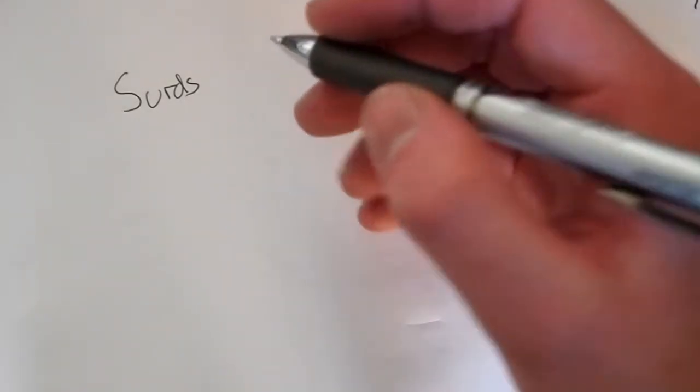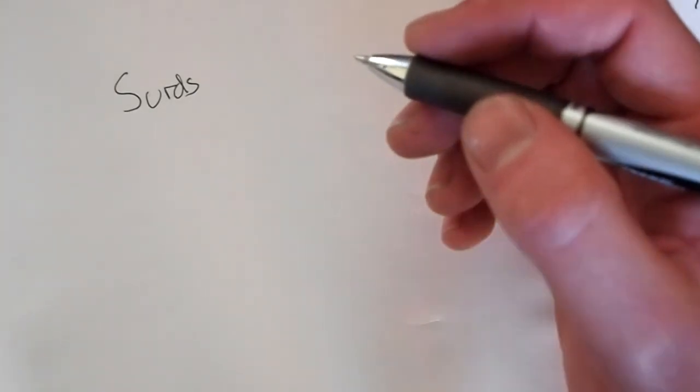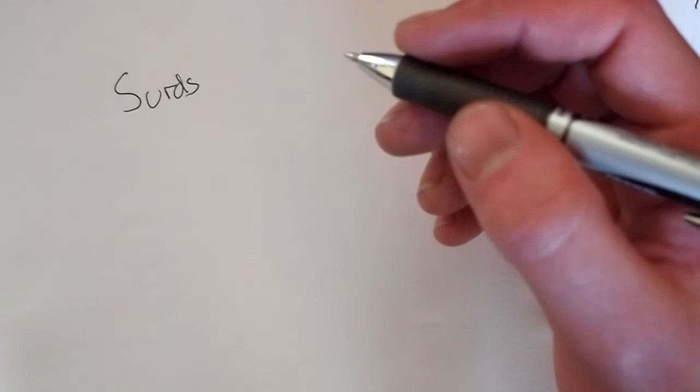So essentially a surd is a number which cannot be directly rationalized, and what I mean by that is it cannot be presented as a fraction.